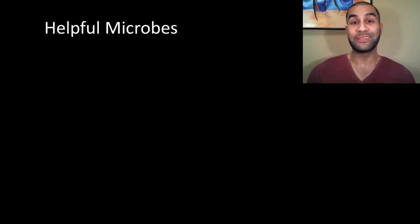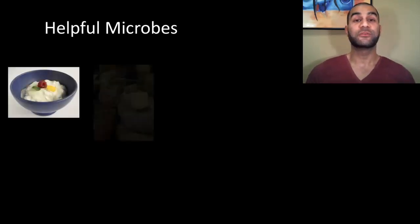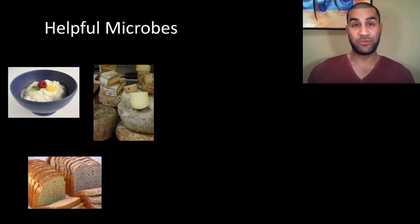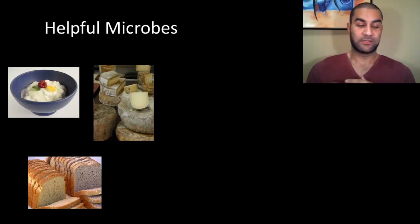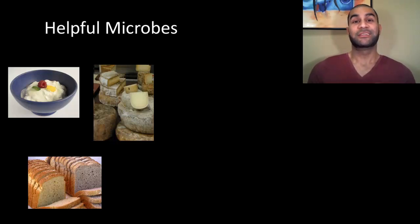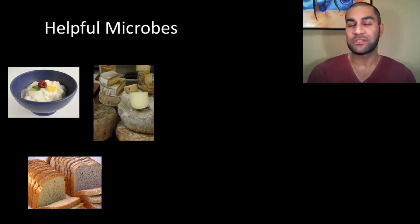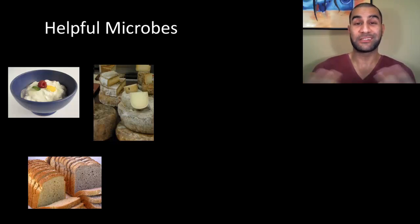Let's talk about ways that we've actually learned to use types of bacteria and microbes to help our own diet. There are multiple food examples of things that require microorganisms in order to make them. Yogurt's a good example. Cheese is a good example. Any dairy product you've ever had, the milk alone included, is full of bacteria. When we talk about making and culturing things from milk, all you're really doing is allowing bacteria to break down the milk itself and begin the process of solidifying that milk.